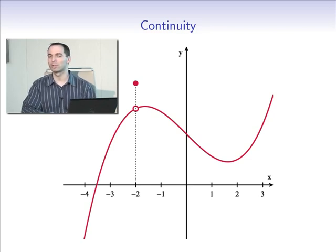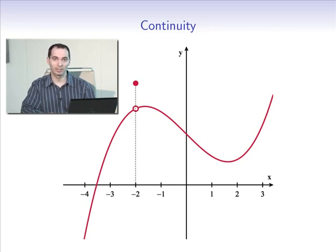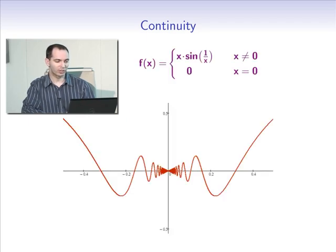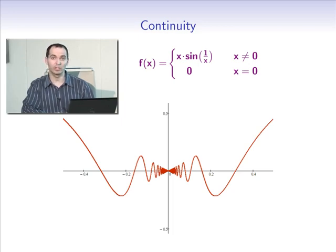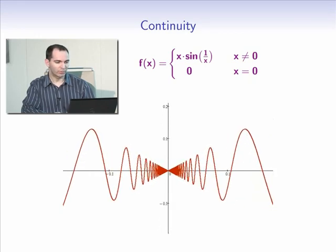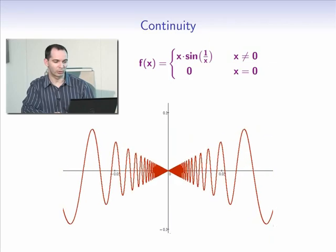We will need, however, a more precise definition of continuity, as it is not always easy to draw conclusions just by looking at the graph. For example, here is the graph of the function x times sine of 1 over x for non-zero x's, and 0 if x equals 0. What is going on at the origin? Is this function continuous at the origin? It is difficult to answer these questions just by looking at the graph. Even if we zoom in, it is still not clear whether the function is continuous or discontinuous at the origin.